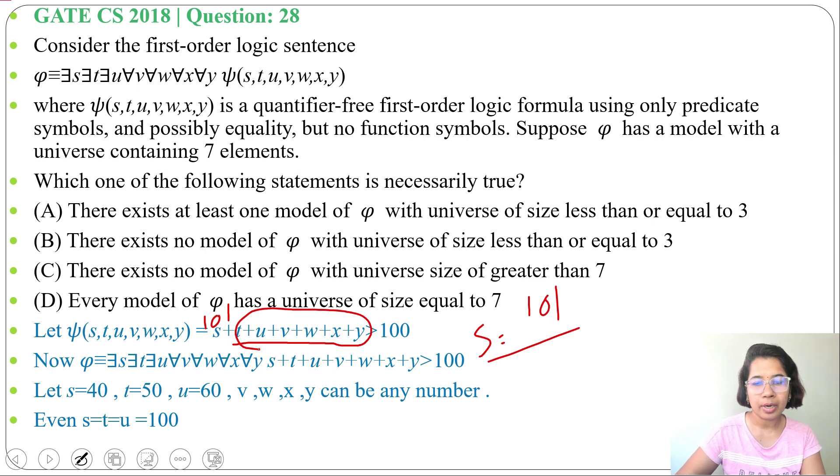So there exists a model for which φ is true for just one value. When s equals 50 and t equals 51, then for 2 values it is true. When sum of s,t,u is greater than 100, then for 3 values it is true.